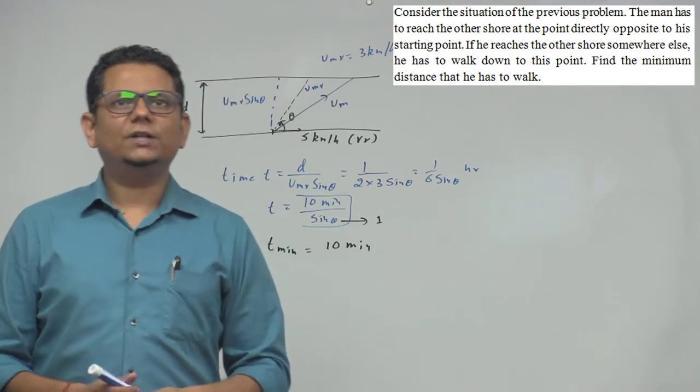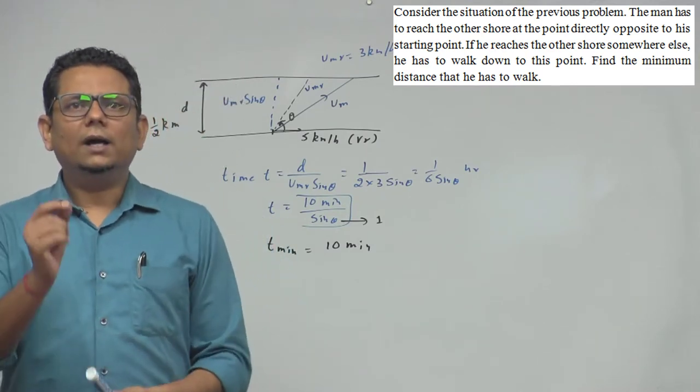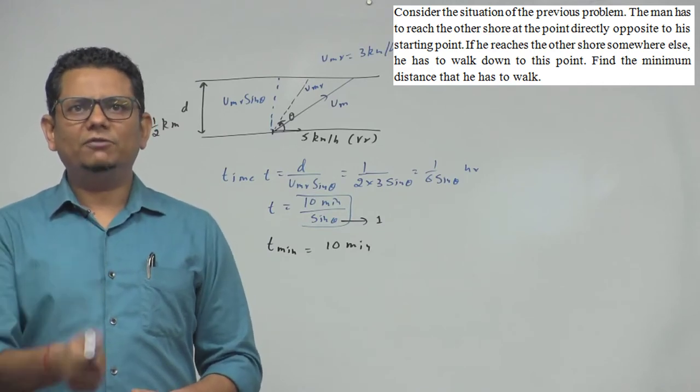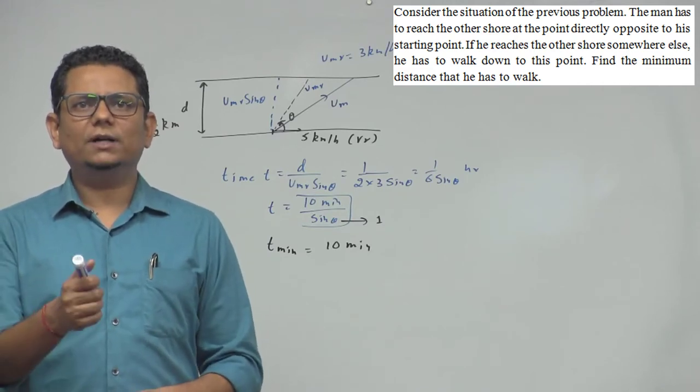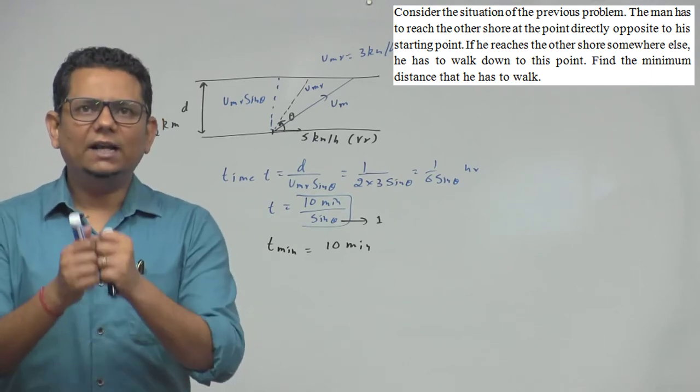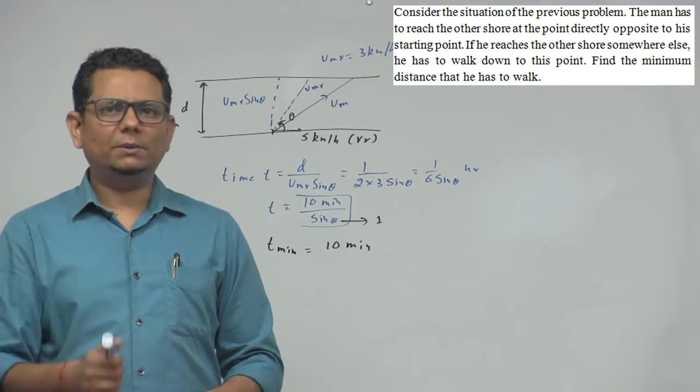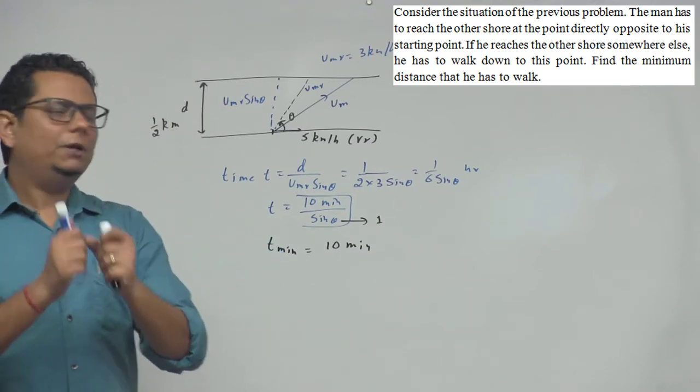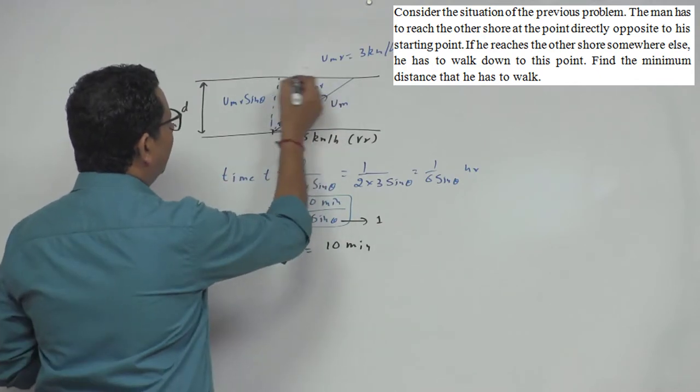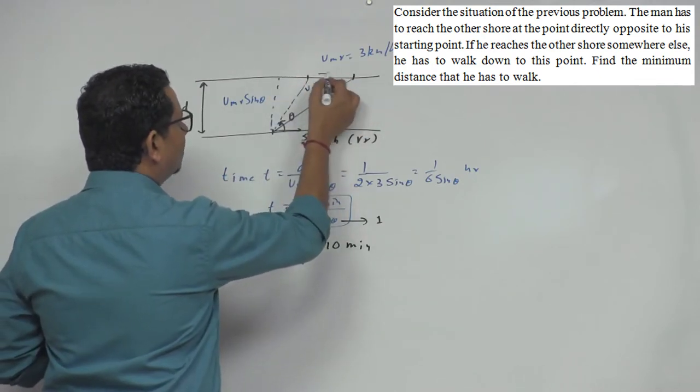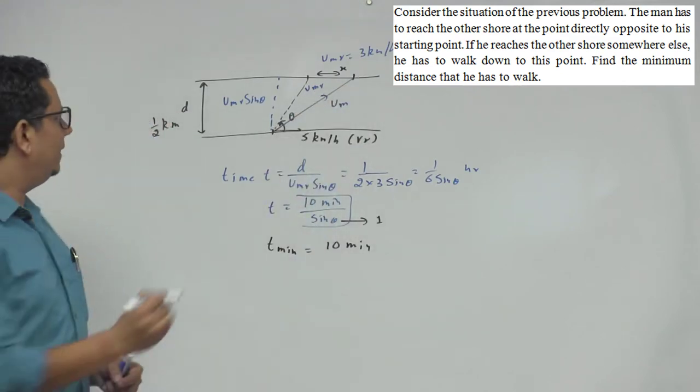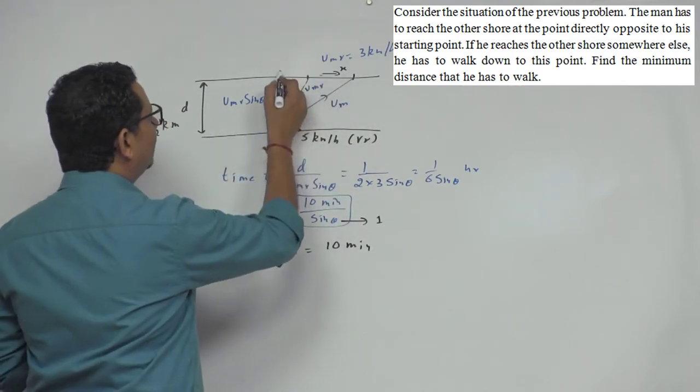Now the question says the man has to reach the other shore at a point directly opposite to his starting point. If he reaches the other shore somewhere else, he has to walk down to this point. Find the minimum distance that he has to walk. We need to find the minimum drift, the distance between where he intended to reach and where he actually reaches.